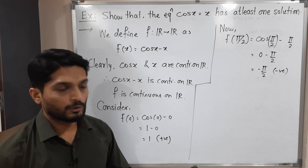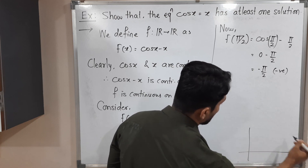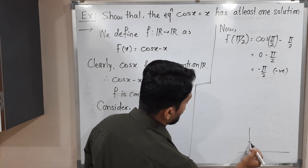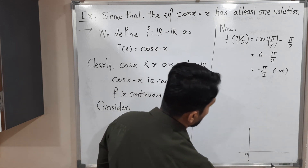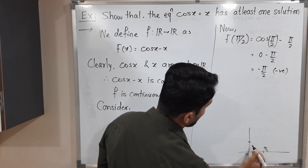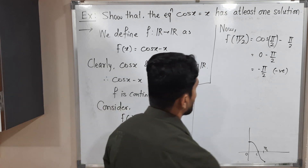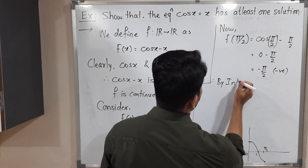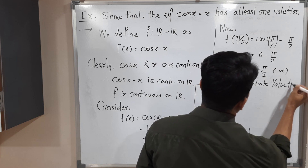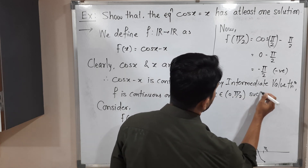We are familiar with the graph of cosine, but here we have f(x) = cos x − x. At x = 0 its value is 1, which is positive. At x = π/2 we are getting −π/2, which is negative. So the starting point is above the x-axis and the ending point is below. By the Intermediate Value Theorem, there exists some point c in the open interval (0, π/2) such that f(c) = 0.